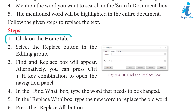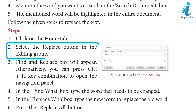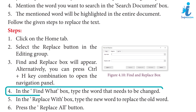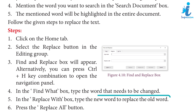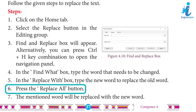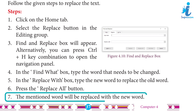Follow the given steps to replace text. Step 1: Click on the Home tab. Step 2: Select the Replace button in the Editing group. Step 3: The Find and Replace box will appear. Alternatively, you can press Ctrl+H to open it. Step 4: In the Find word box, type the word that needs to be changed. Step 5: In the Replace with box, type the new word to replace the old word. Step 6: Press the Replace All button. Step 7: The mentioned word will be replaced with the new word.